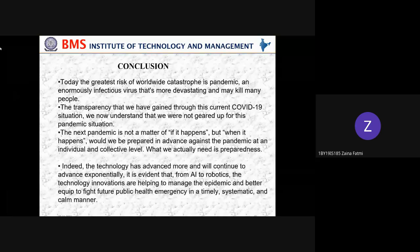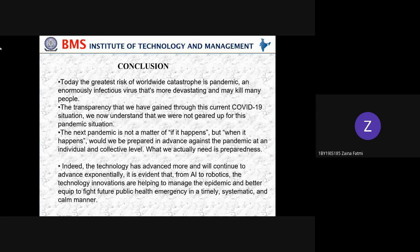In conclusion, today the greatest risk of worldwide catastrophe is a pandemic — an enormously infectious virus that is more devastating and may kill many people. The transparency gained through the current COVID-19 situation shows we are not fully geared up for a pandemic. This next pandemic is not a matter of if it happens, but when — and the question is whether we will be prepared in advance at an individual and collective level.